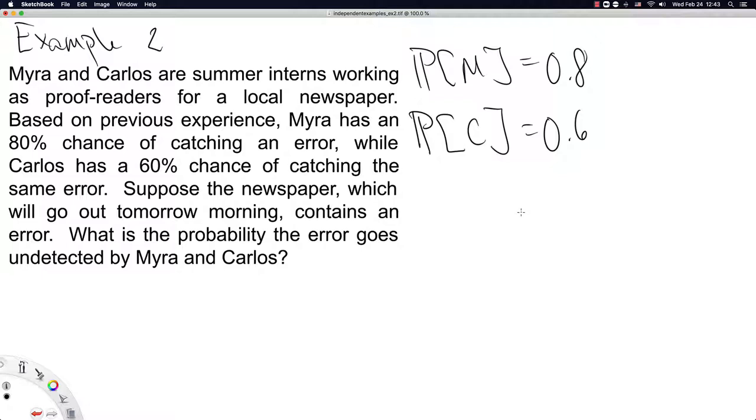Suppose the newspaper, which will go out tomorrow morning, contains an error. What is the probability the error goes undetected by Myra and Carlos? Okay, so what we're essentially looking for, using M and C as our events of interest, is Myra or Carlos could catch an error. But if the error goes undetected, that means neither of them caught it.